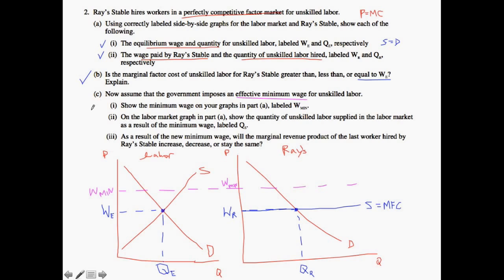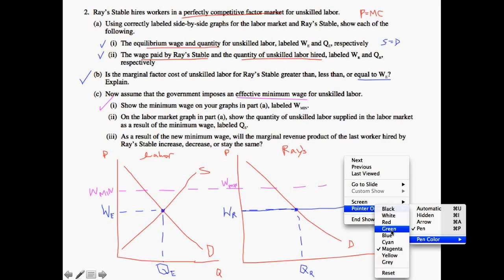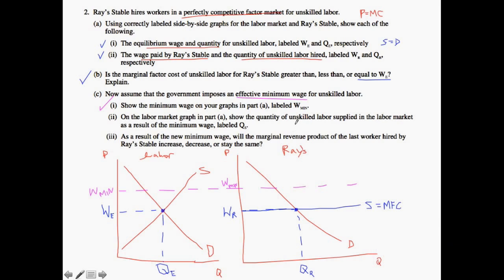I'm going to mark that on both of the graphs just to be safe. Okay, so that is that part. And the next part is asking, on the labor market graph in part A, show the quantity of unskilled labor supplied in the labor market as a result of the minimum wage, labeled Q-S. So what we know is that they are essentially asking where W-min equals the supply curve. So I'm going to go ahead and switch back to, let's say, green this time. And I'm looking for where W-min equals the supply curve. So in the labor market, that happens at this point. I'm going to go all the way down, and then I'm going to label that as Q-S. And that is essentially how much is supplied in the labor market.